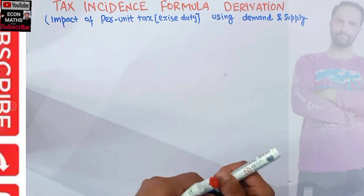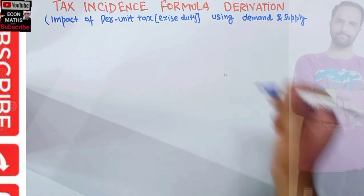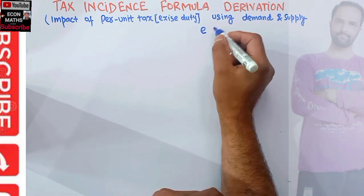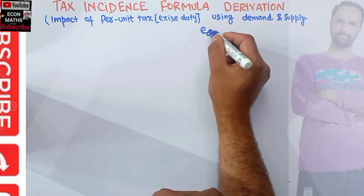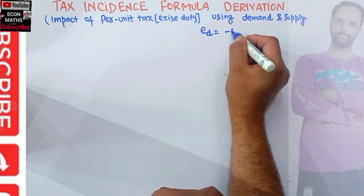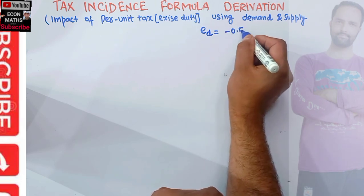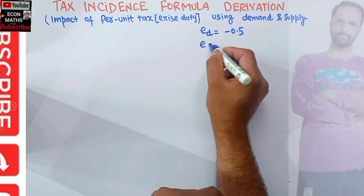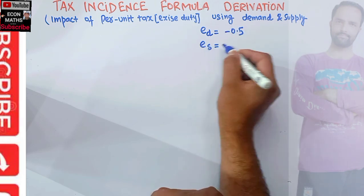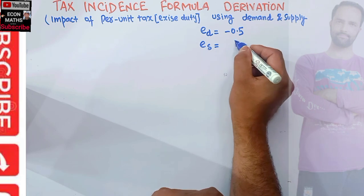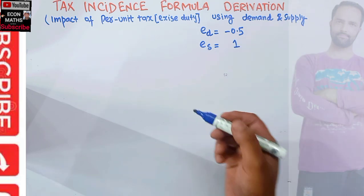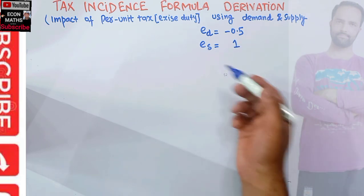To derive this formula, let me give you an example. Let us say the elasticity of demand of a product is given as minus 0.5 and the elasticity of supply of the product is given as 1.